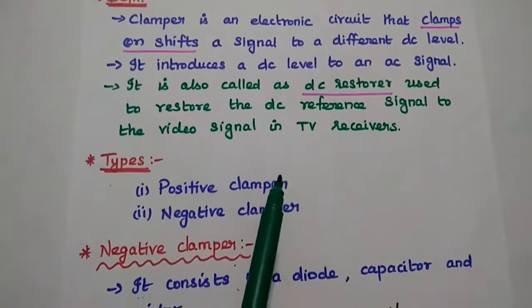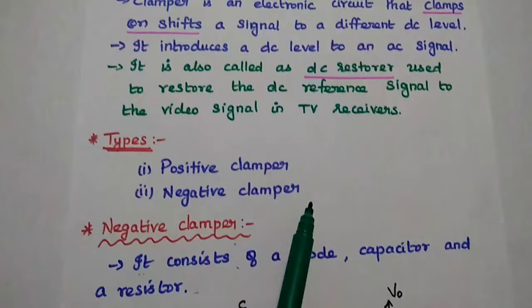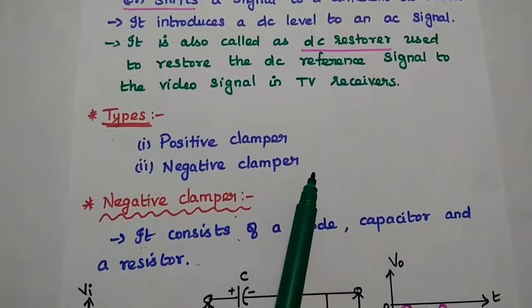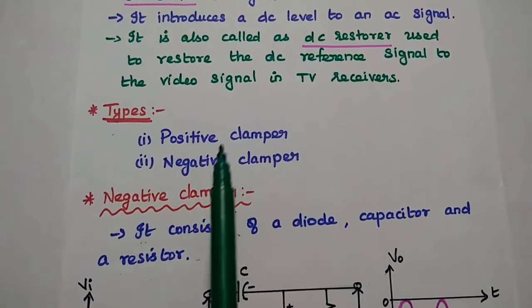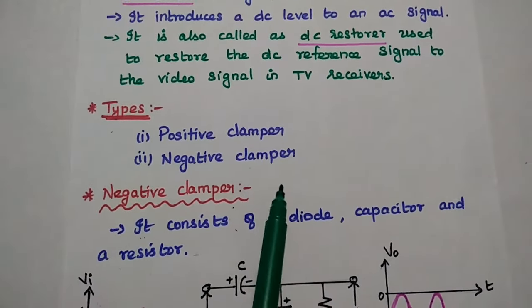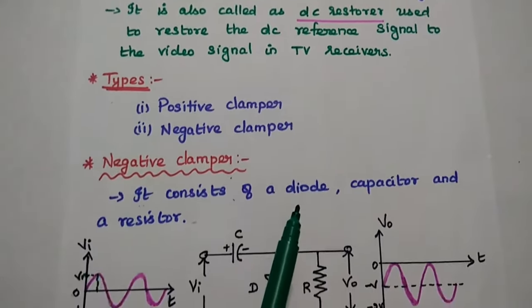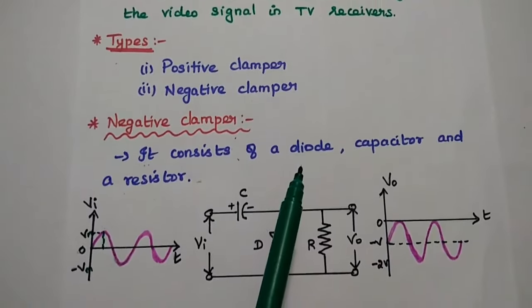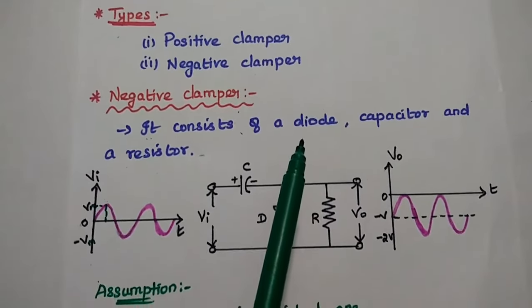The types of clampers are: positive clamper and negative clamper. Let's discuss each type in detail.